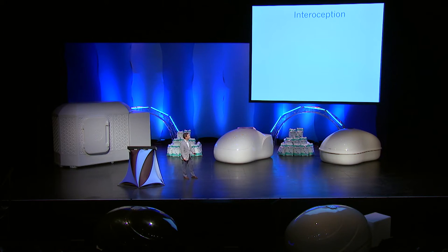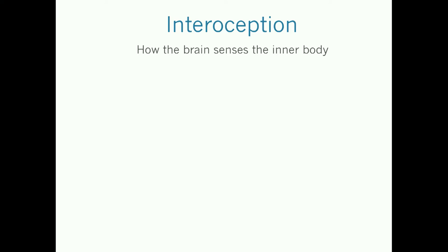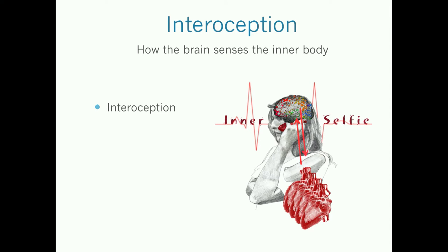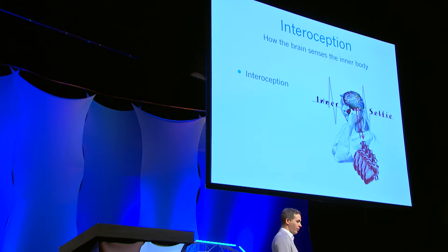So what is interoception? I talked about it a little bit last year, but for those of you who don't remember or who are new to this, interoception is really how the brain senses the inner body. One easy way to think of it is sort of like an inner selfie — a picture of your body in the moment. But what's different about interoception is that you have this dynamic crosstalk happening between the body and the brain.